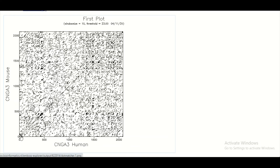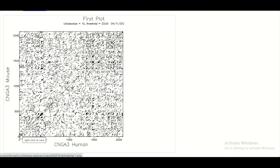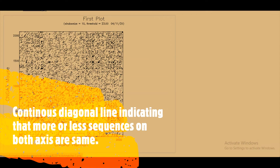You can see here that in the center of the graph you can find a straight diagonal line. Now this straight diagonal line is letting us know about the global alignment — from nucleotide number one to the last nucleotide, all of these sequences are compared with one another. This diagonal line is letting me know that more or less both sequences on the x-axis and the y-axis are similar.